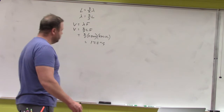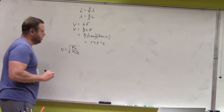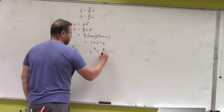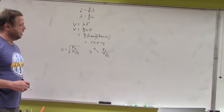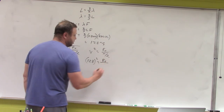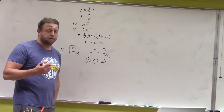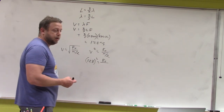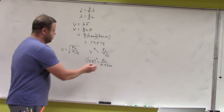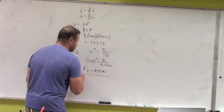Now solving for tension using the equation v equals the square root of force tension over linear density. Squaring both sides: v squared equals force tension over linear density. Plugging in: 128 meters per second squared equals force tension divided by 0.030 kg/m (converting 30 grams per meter to kilograms). Multiplying across gives a tension in the string of 492 newtons.